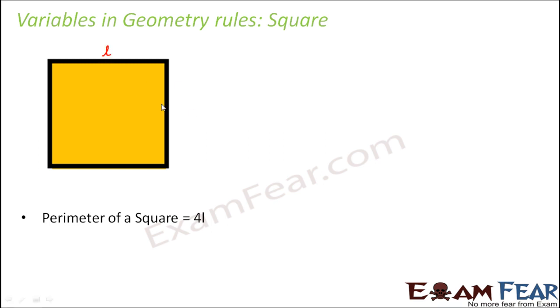So if we assume that the length of each side is L, L is again nothing but a variable. So L would change depending on the square. If you have a very small square then the value of L would be small. If you have a big square, L would be large. So the value of L will keep on changing. So we can say perimeter of a square is equal to 4 times L, 4L.